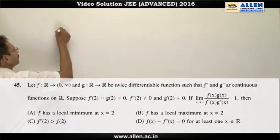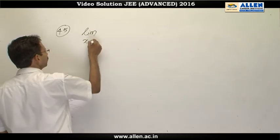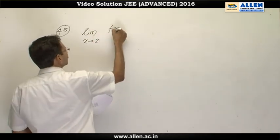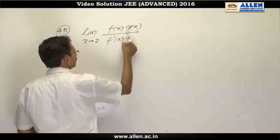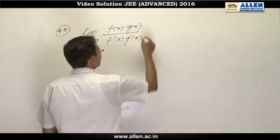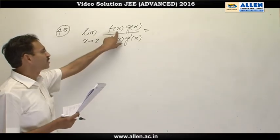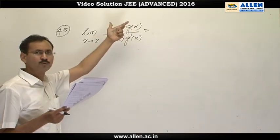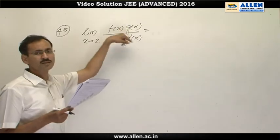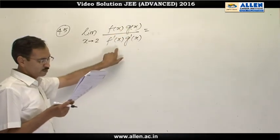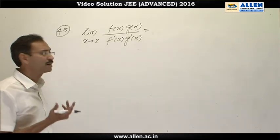In question number 45, this is limit x approaching to 2, f(x) into g(x) divided by f dash x upon g dash x. This is given as 1. Whereas numerator is approaching to f(2) into g(2) as both the functions are continuous and differentiable and g(2) is given as 0, so numerator is approaching to 0. Similarly, denominator is approaching to 0 because f dash 2 is 0. As it is in the form of 0 by 0, I can apply L'Hospital.